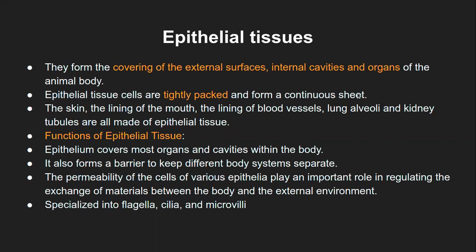Imagine an intestinal wall — if it is not tightly packed, food particles can easily escape through the intestine itself. Or in the case of the stomach, if the innermost wall is not tightly packed as a continuous sheet, food or even acid can leak out from the stomach. In the lung, we have cavities so that gases are not leaked anywhere but are carried into the blood through the alveoli. Epithelial tissue must be arranged in very tightly packed cells forming a continuous layer — this includes the skin, the lining of the mouth, and the lining of blood vessels.